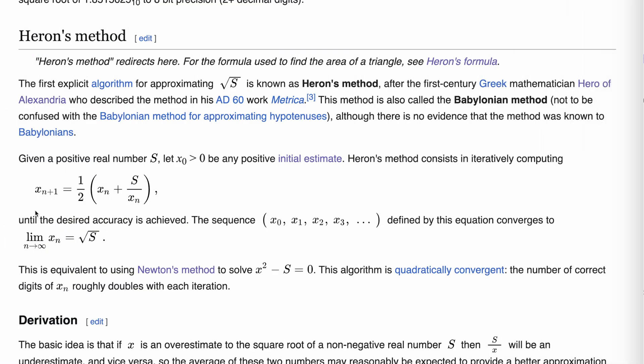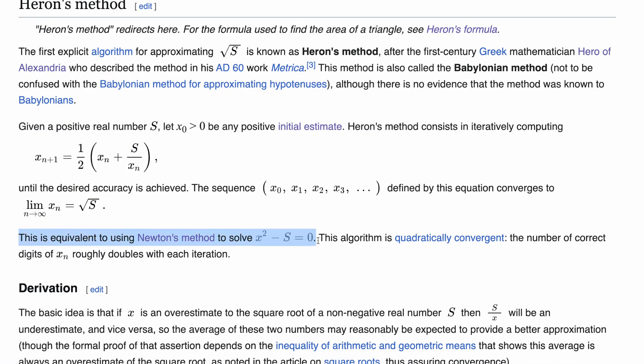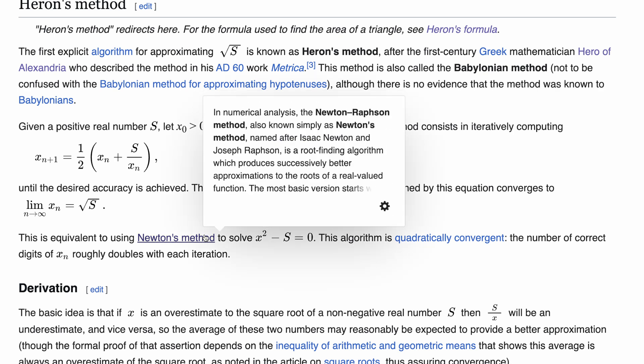Another fun fact about Heron's method is that it is some kind of specialization of Newton's approach, which is a way to find the zeros of a function f.